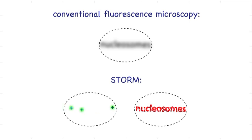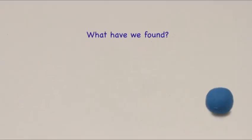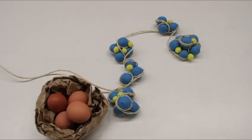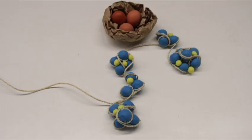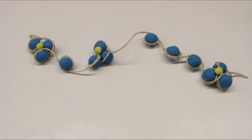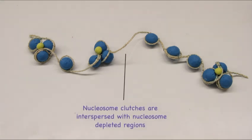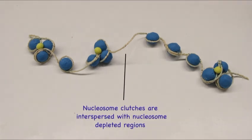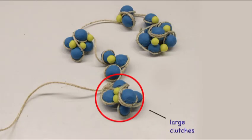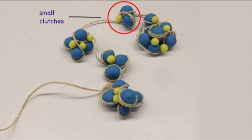The positions of the fluorophores can then be combined together to build a high-resolution map of the underlying biological structure. Using this technique, we were able to visualize and count the nucleosomes along the chromatin fiber. We found that nucleosomes form heterogeneous groups of varying sizes, like egg clutches, interspersed with nucleosome-depleted regions.